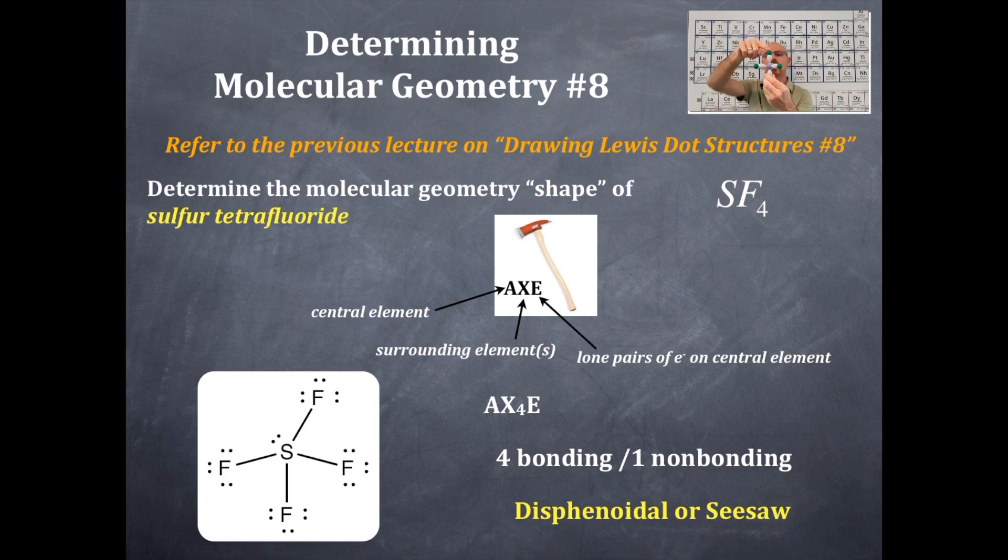But just to make certain, this bond angle at the pole to the equator here is 90 degrees. And then since basically this three structure, so one, two, three, is a trigonal planar structure, that means that these are 120 degrees.